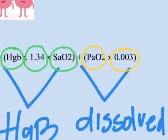As you can tell by looking at these numbers, the second portion of the equation — the dissolved portion — tends to be less important. This becomes important only if you're talking about patients at varying altitudes or in hyperbaric oxygen chambers, such that there are very large changes in their PaO2.